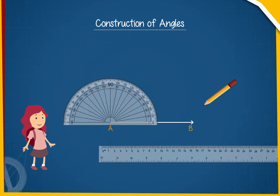Now, she places the protractor in a way that the center of the protractor falls exactly at A and the line of the protractor coincides with the ray AB. Next,